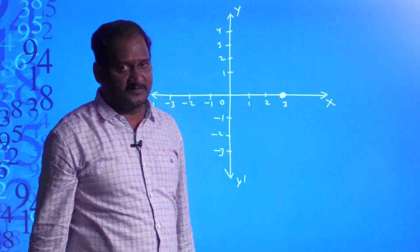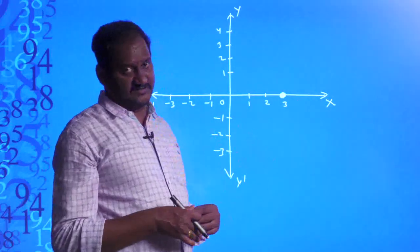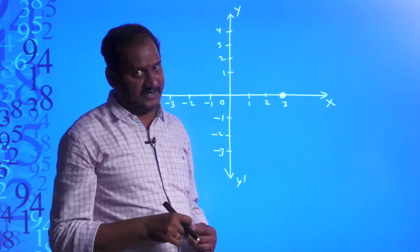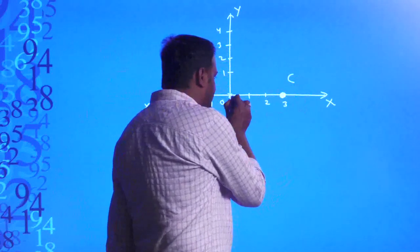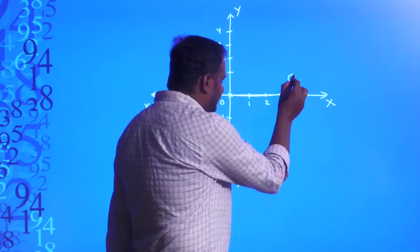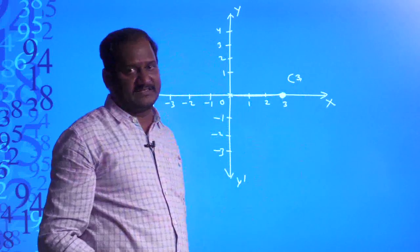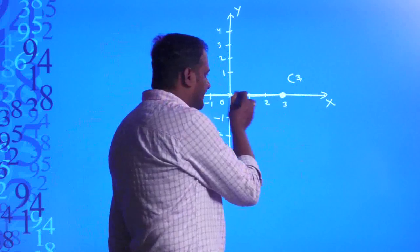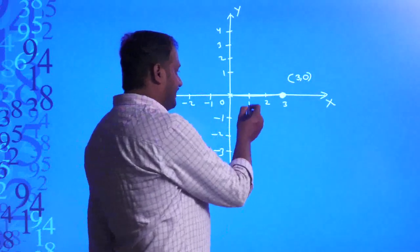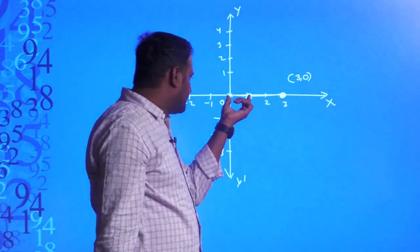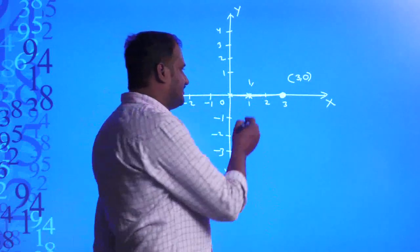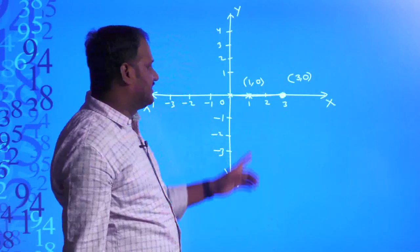Suppose my position is exactly at 3 on the x-axis. The horizontal distance of that particular point from the origin is 3 units, and the vertical distance — there is no vertical distance — so vertical distance is 0. Similarly, for another point at 1 on x-axis: horizontal distance is 1, vertical distance is 0. So points on the x-axis are (1, 0) and (3, 0).